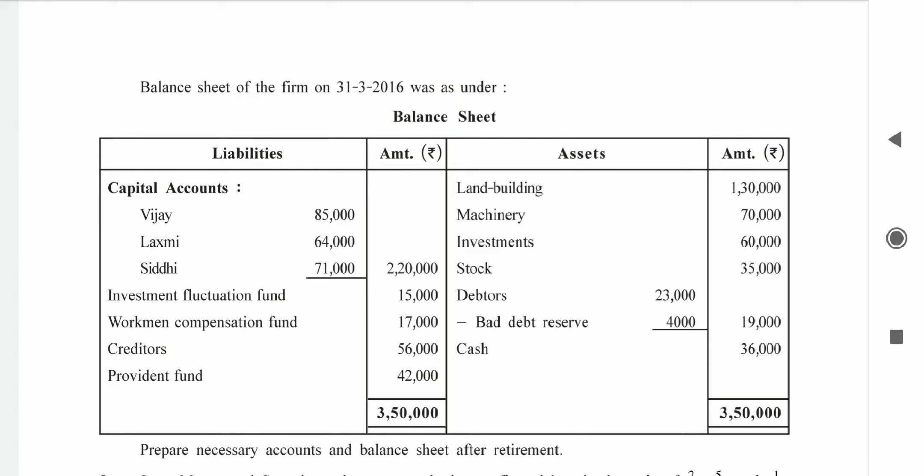Investment is 60,000 but taken at 40,000, so there is a loss of 20,000. Against this, the fund available is 15,000. So there is a net loss of 5,000. Entry: revaluation account debit side to investment 5,000.